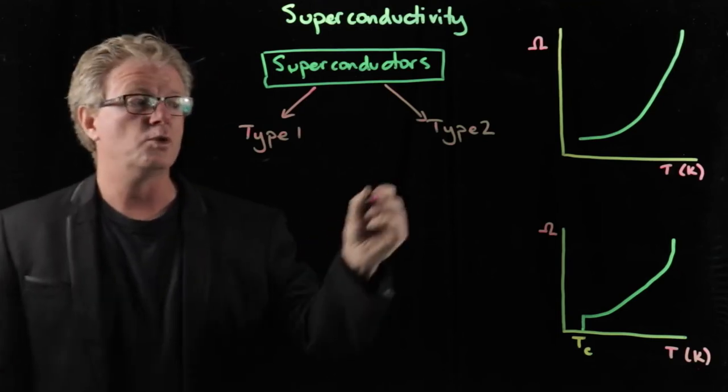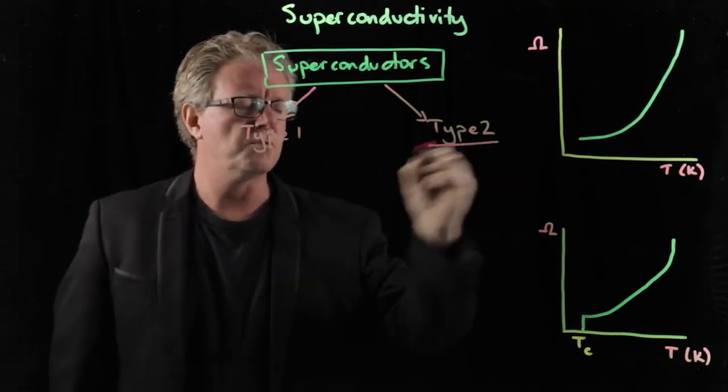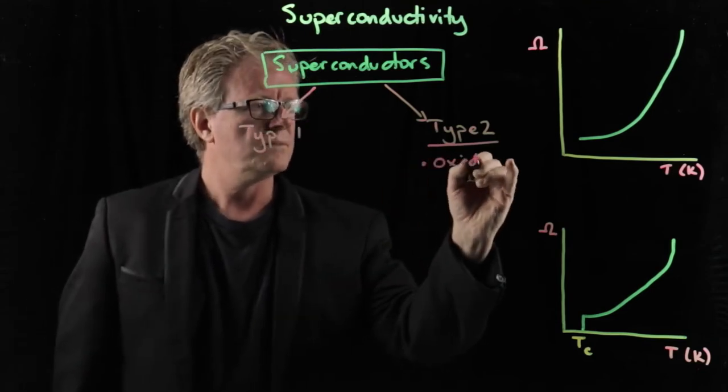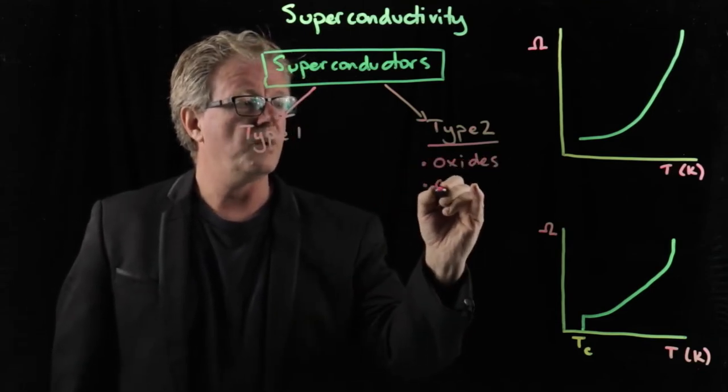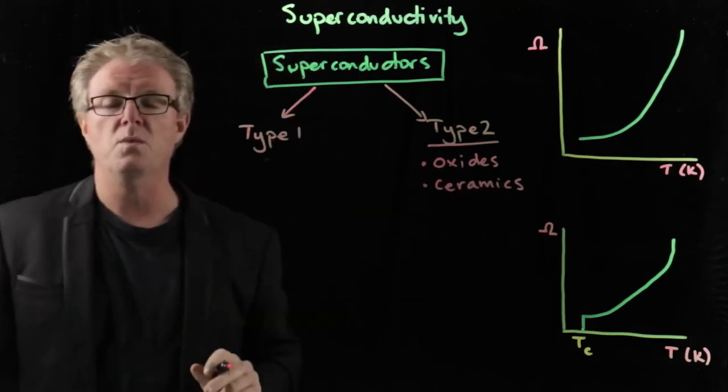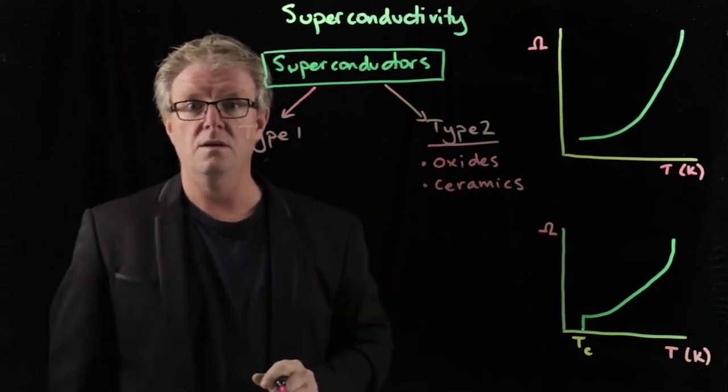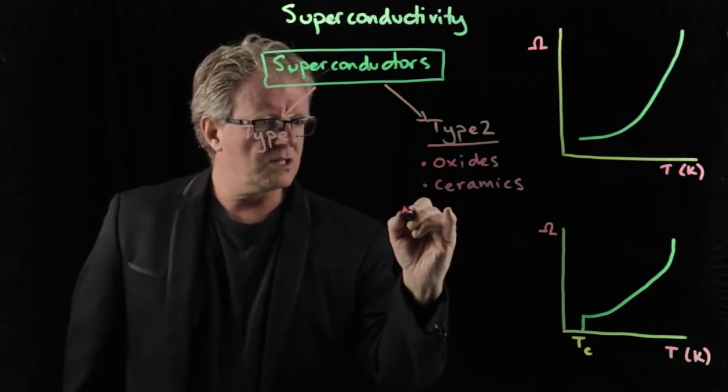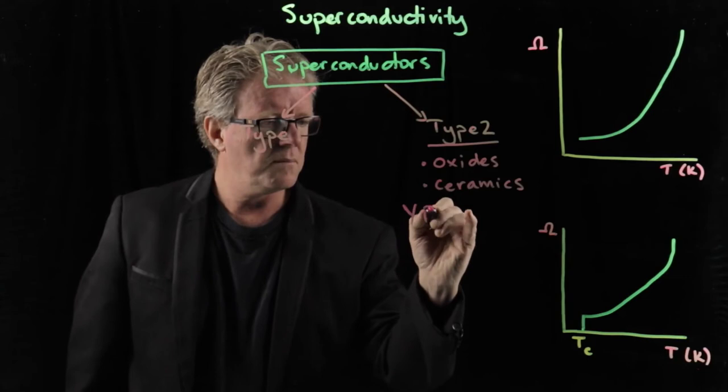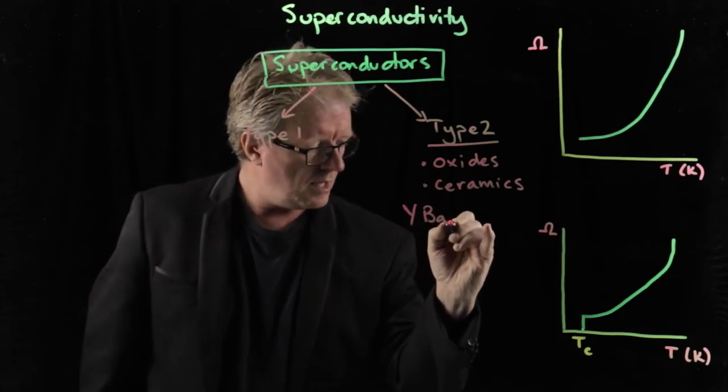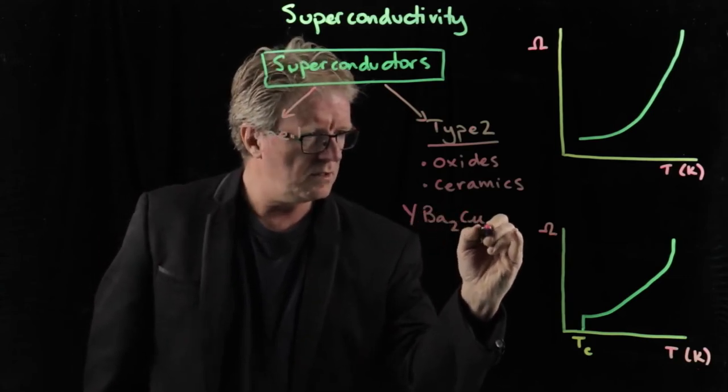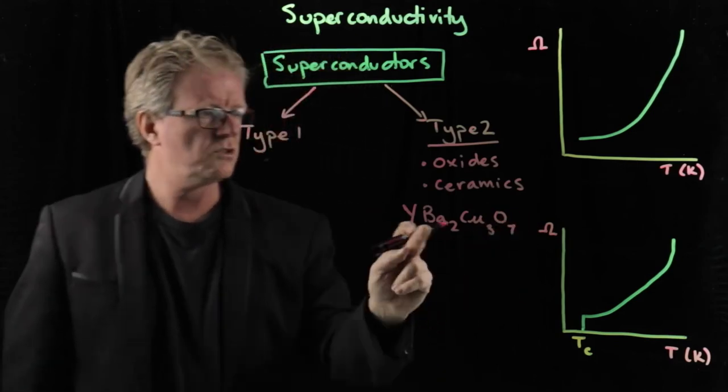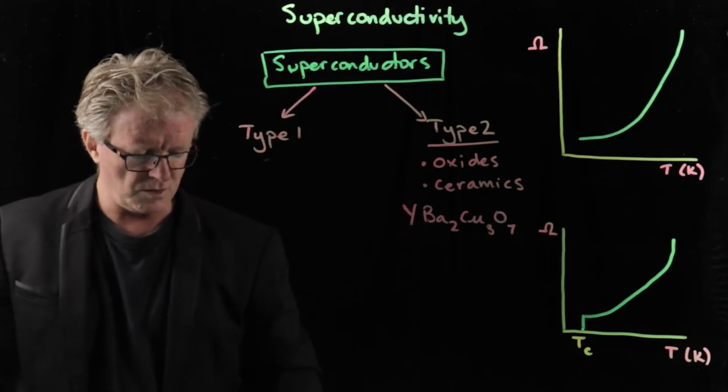Now we're going to be looking at Type 2. Type 2 superconductors are those that are made of oxides. They're also made of ceramics. And it's the ceramic one that we are using today. The particular one we're looking at today is made up of yttrium, barium, copper, and then oxide. So yttrium barium copper oxide, ceramic.